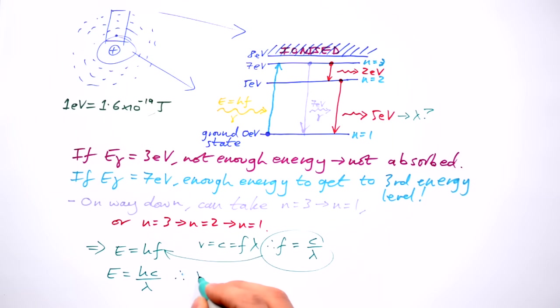We end up with energy equals HC over Lambda. Rearrange this, and we end up with wavelength equals Planck's constant times the speed of light divided by the energy of the photon. Give that a go if you want. Pause the video if you feel like it.